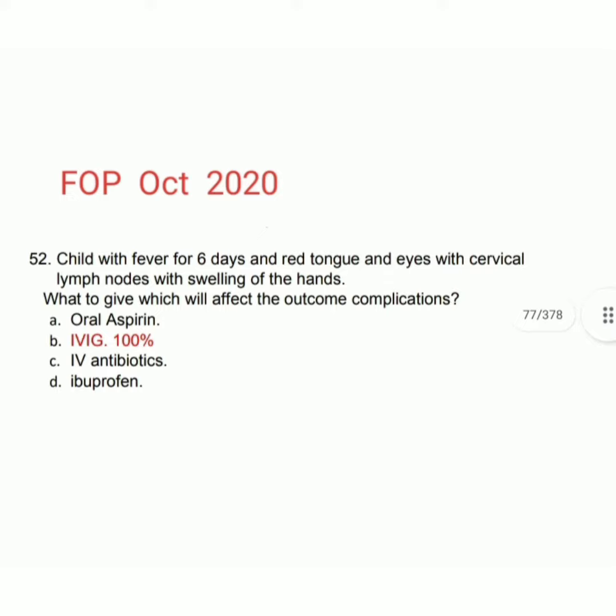All the features mentioned in the question support the diagnosis of Kawasaki disease. We know Kawasaki disease treatment is aspirin and IV immunoglobulin. They ask which will affect the outcome complications — the answer is IV immunoglobulin. Remember, intravenous immunoglobulin will affect the outcome complications.